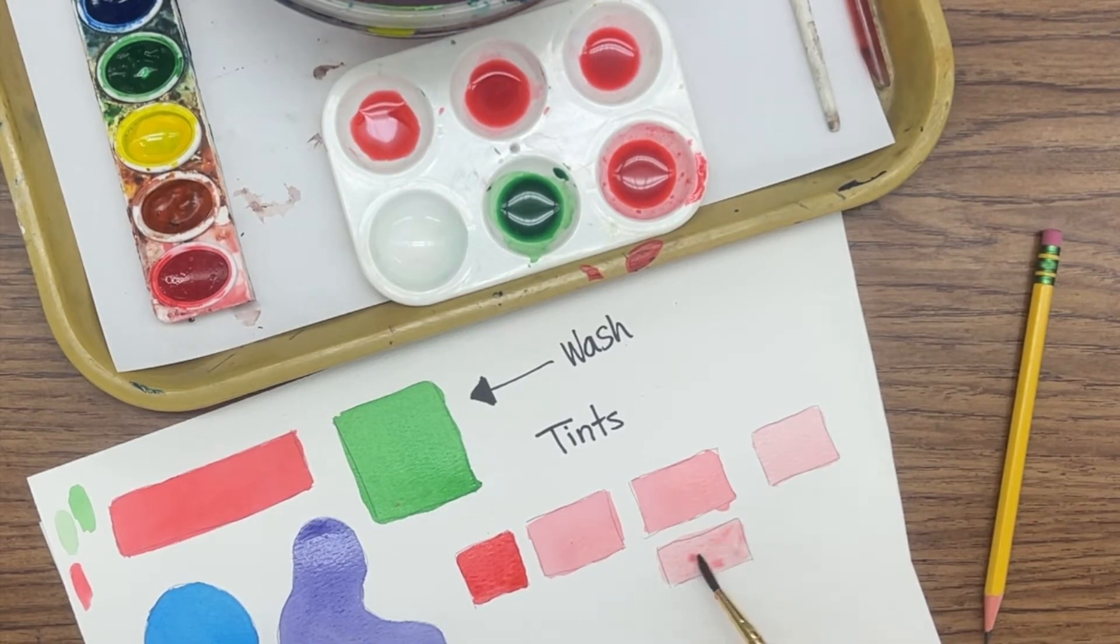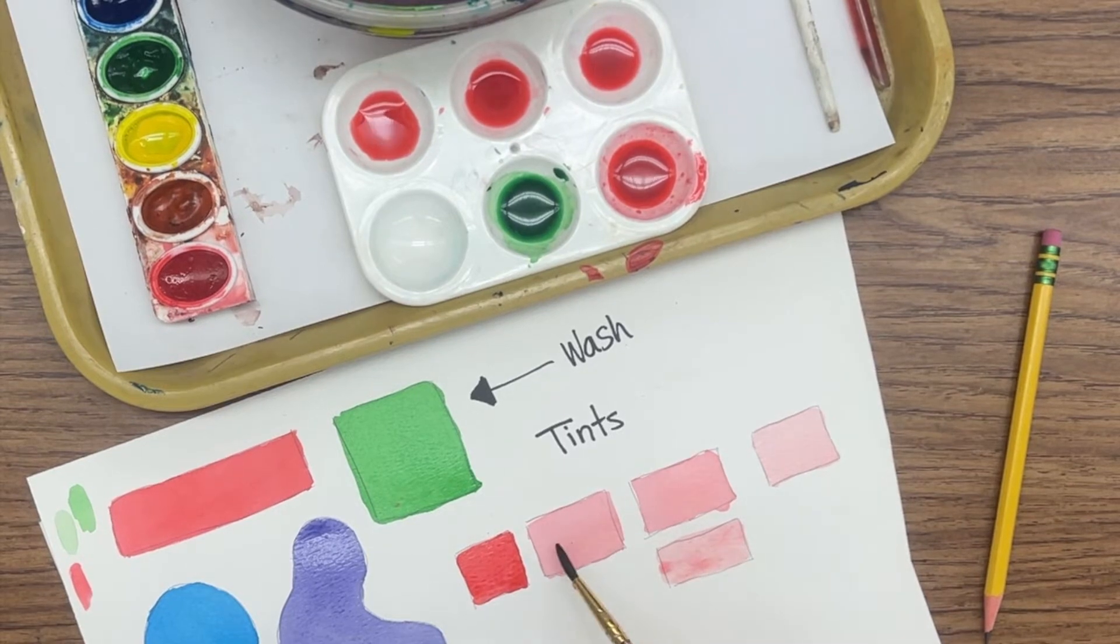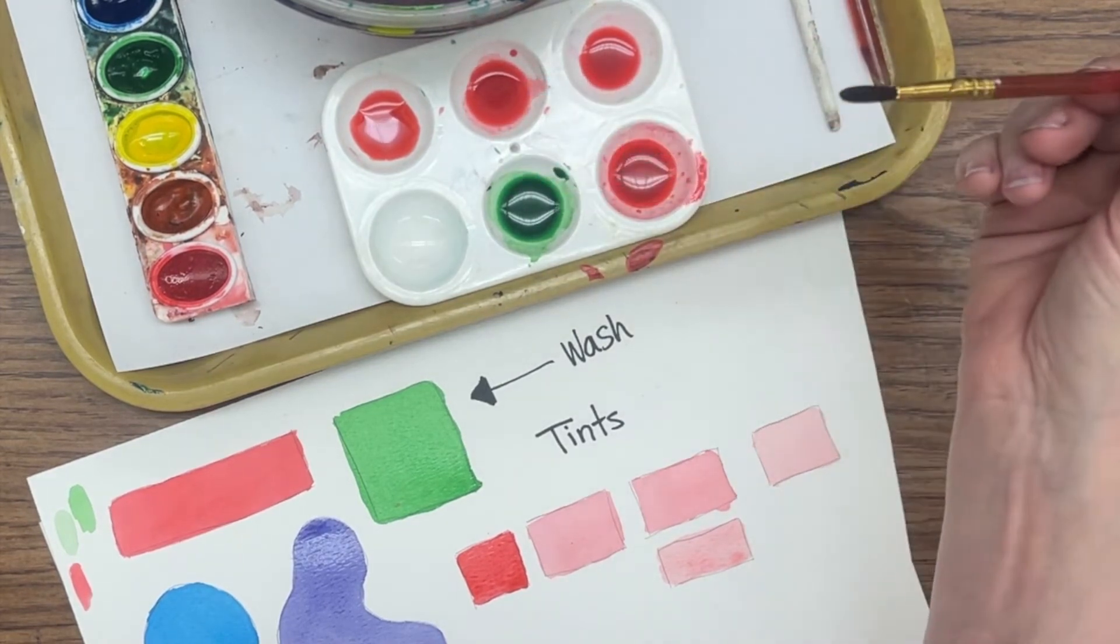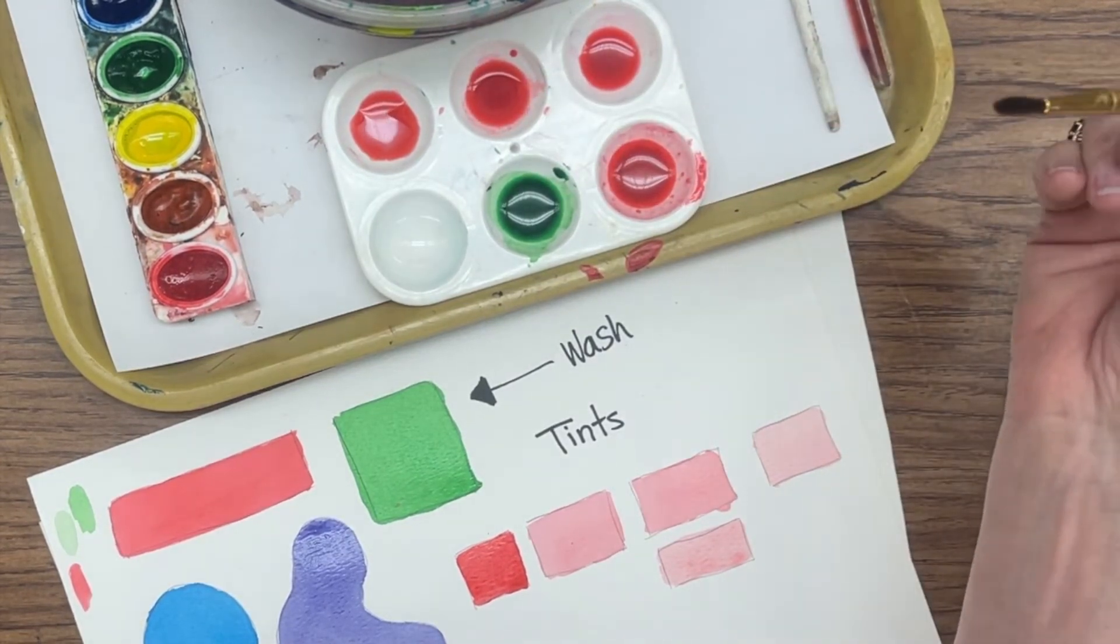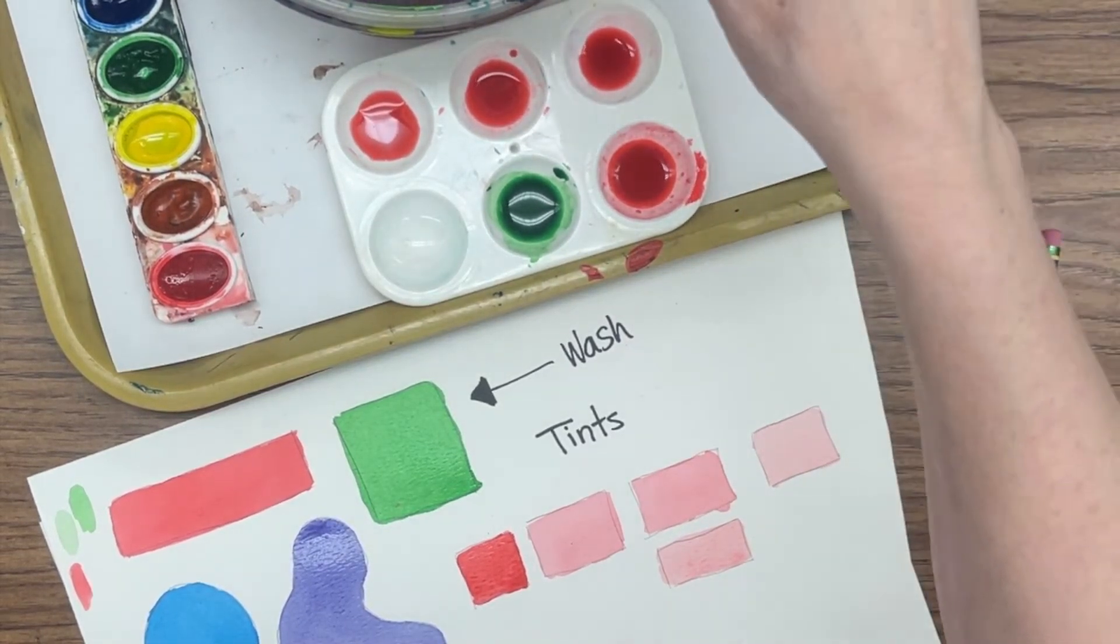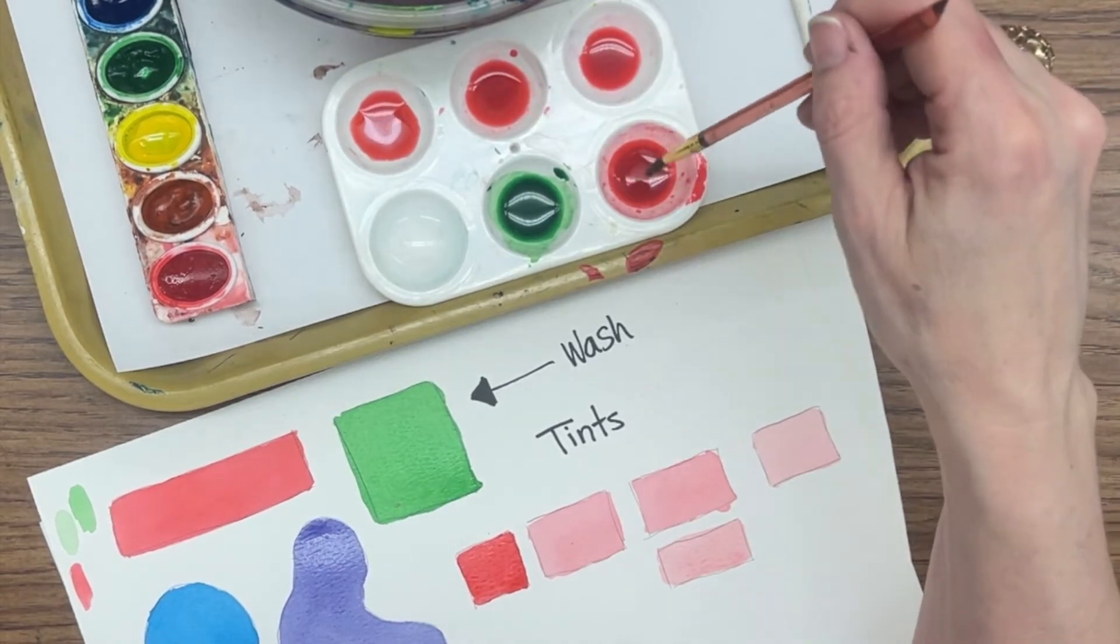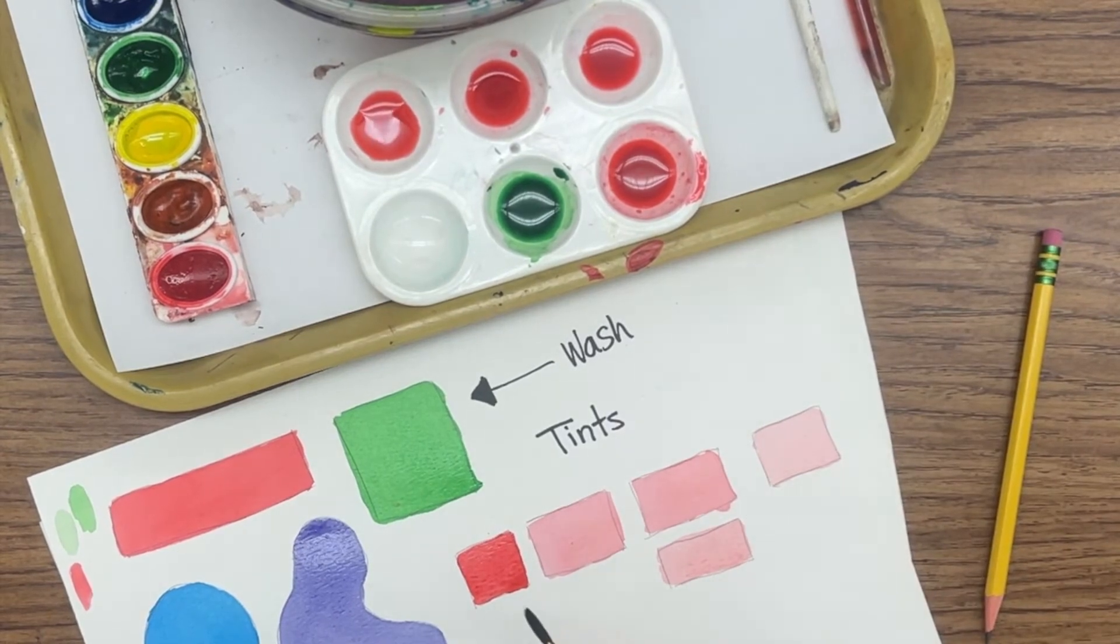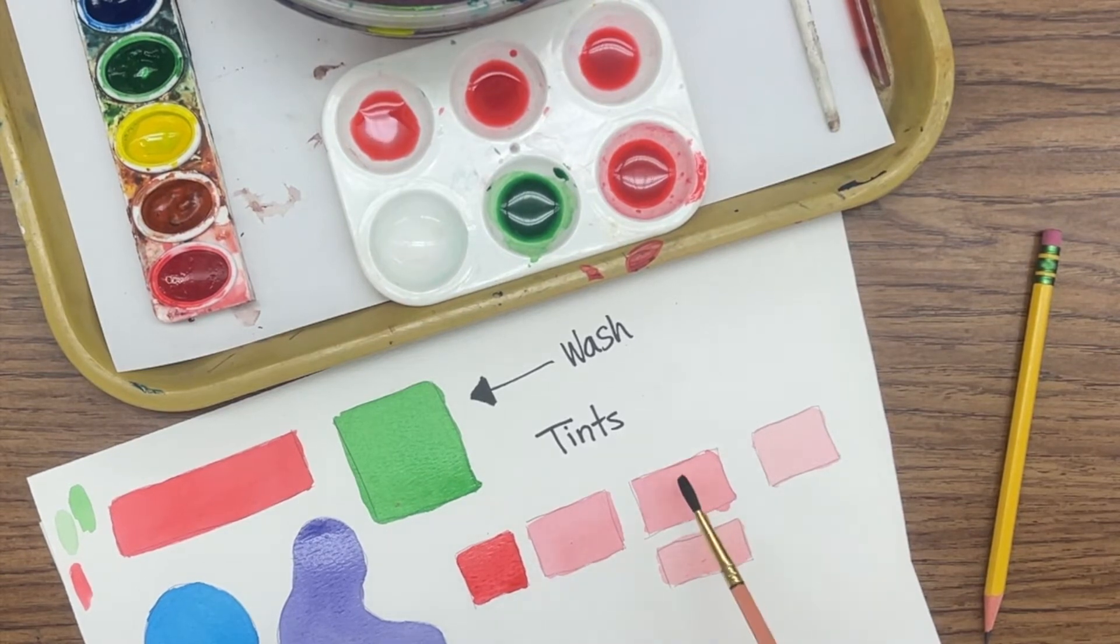I forgot to touch off my excess, so this turned out about the same as that. So always, always, always when you get color, touch off your excess. And then when you paint with it, you'll get the right color. Or maybe I just didn't get all of the paint from here off of my brush. Could be a lot of different things. But if you are careful when you make tints, you're going to get lighter and lighter, the more water is added.